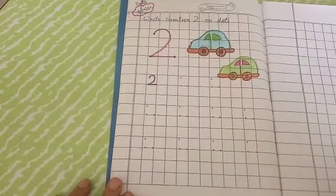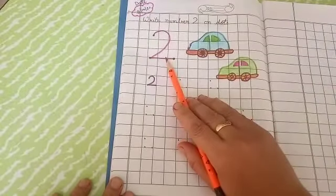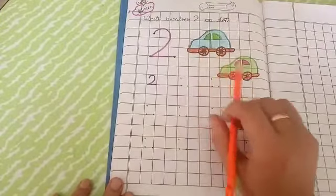How many cars are there? One, two, two cars. How many cars are there? Two cars.